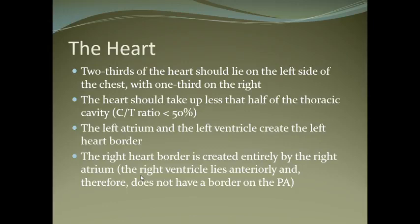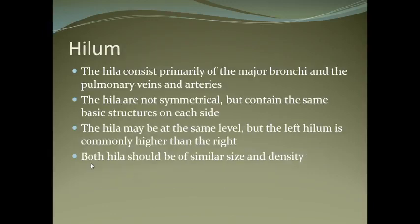Two-thirds of the heart should lie on the left side of the chest and one-third on the right. The heart should take up less than half of the thoracic cavity — the cardiothoracic ratio must be less than 50%. The left atrium and left ventricle create the left heart border. The right heart border is created entirely by the right atrium, and the right ventricle lies anteriorly so it does not have a border on the radiograph. The hilum consists primarily of the major bronchi and pulmonary veins and arteries.